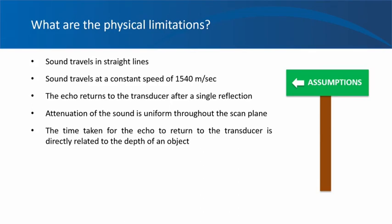Another assumption is that the echo returns to the transducer after a single reflection, which is not true because multiple reflections can occur. The machine also presumes attenuation is uniform throughout the scan plane. Attenuation is the loss of energy of the sound beam as it passes through a structure — cysts are excellent transmitters, while stones and calcifications are strong attenuators. It also assumes the time for the echo to return is directly related to depth, which is mostly true but has exceptions that result in artifacts.